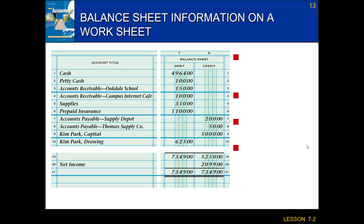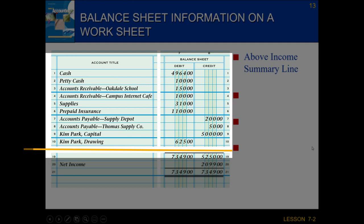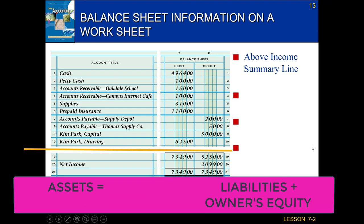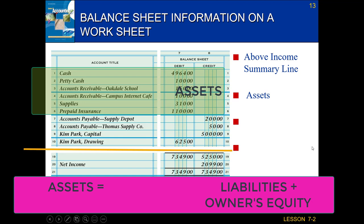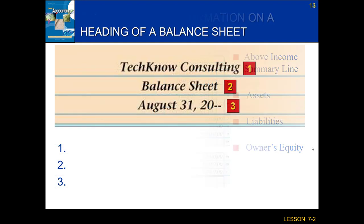When we were preparing our worksheet, we drew an imaginary line on the income summary. Everything below income summary went on the income statement, and everything above the income summary line is going to be on our balance sheet. Everything above that line follows our accounting equation: assets equals liabilities plus owner's equity. So it's going to include our assets — cash, petty cash, accounts receivable, supplies, and prepaid insurance — then our liabilities, accounts payable, and finally our owner's equity: capital, drawing, and net income or net loss.